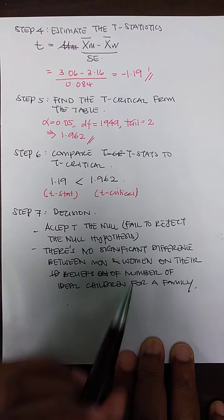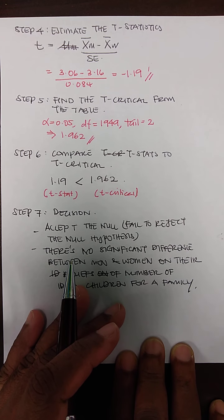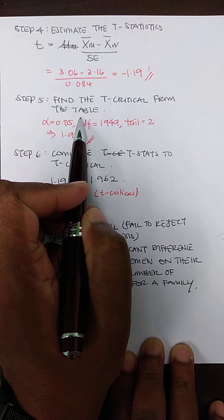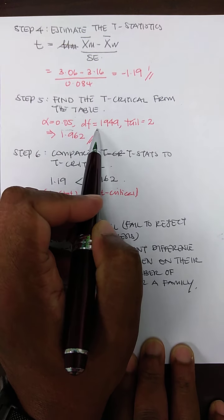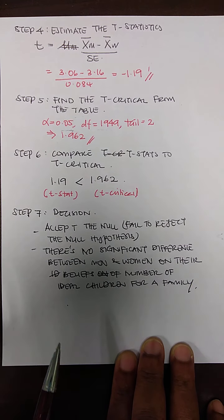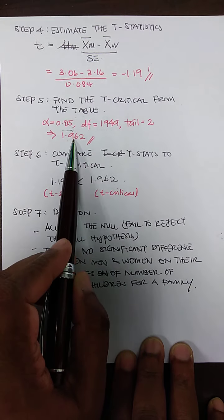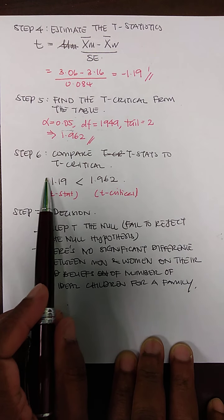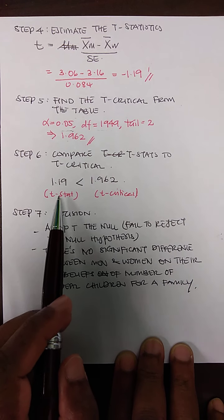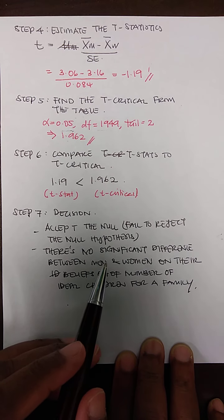Next, we find the t-critical value. The t-critical determines the boundary — scores within it are close to the population mean difference, scores beyond it indicate a significant difference. Using our alpha (0.05), degrees of freedom (1949), and two-tailed test, the t-table gives a critical value of 1.962. Comparing: our t-statistic of 1.19 is less than the critical value of 1.962, so it falls within the boundary.